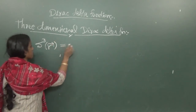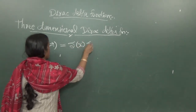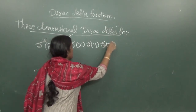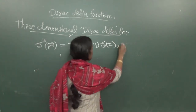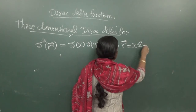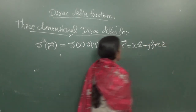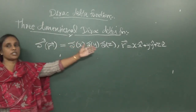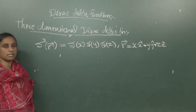This means δ(x), δ(y), and δ(z). Similarly, the position vector r is equal to x x-hat plus y y-hat plus z z-hat — the same position vector we have already discussed in previous classes.